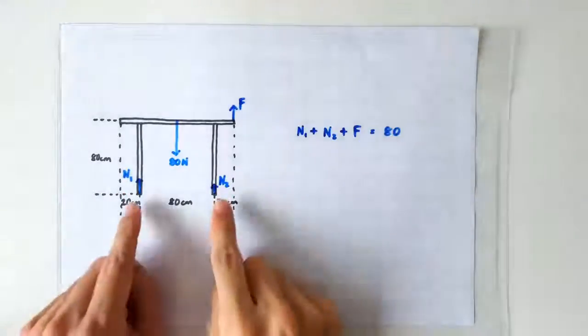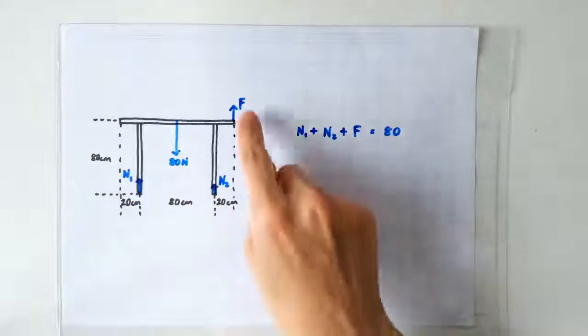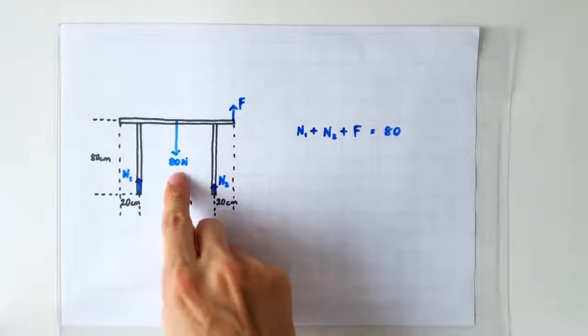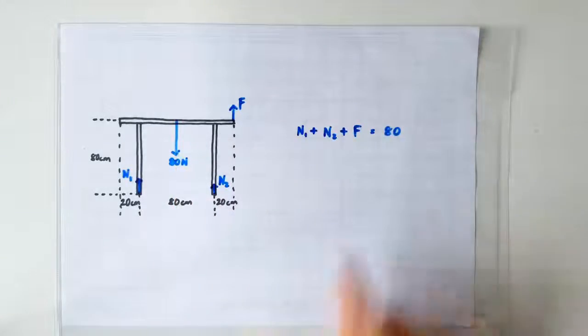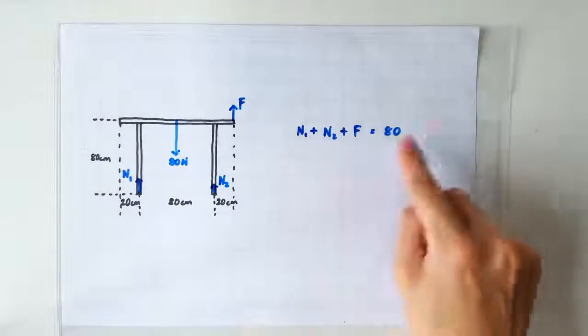Firstly, these two normal contact forces will no longer add up to 80 newtons, because the lifting force would have come to help support the 80 newtons weight of the table. See the equation here? N1 plus N2 plus F equals 80 newtons.